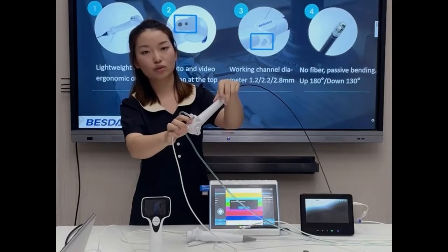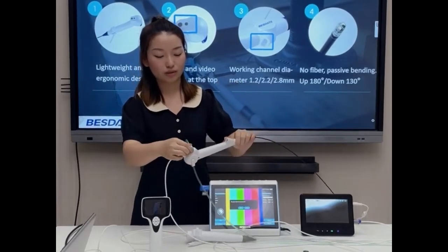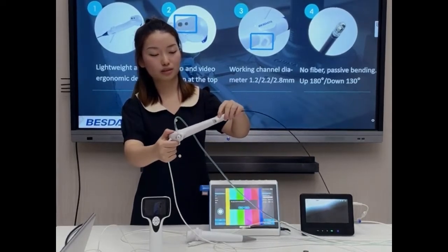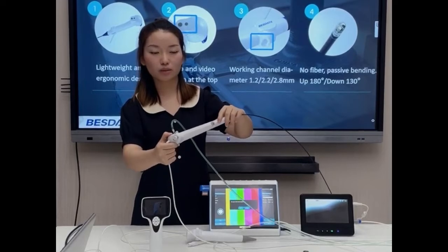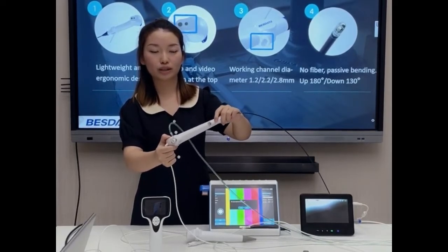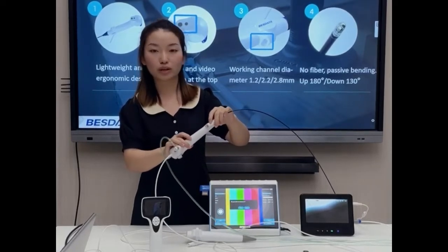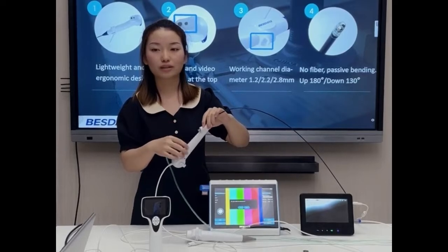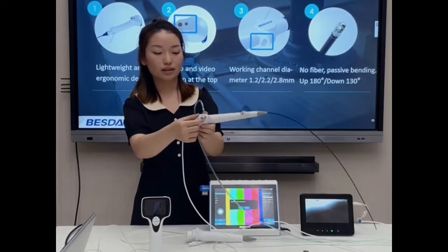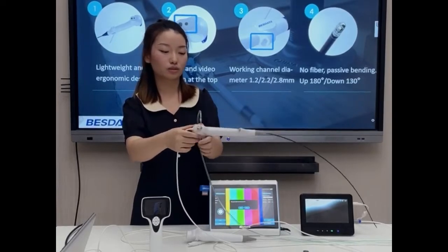Just need to very short click. And we also have working channel type. This place. There are three size optional: 1.2, 2.2 and 2.8 millimeters. And the biggest working channel 2.8 millimeters can provide sufficient suctioning. Yes, right. And this is a suctioning control port.